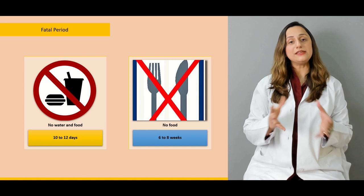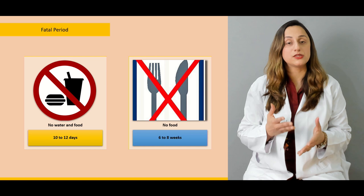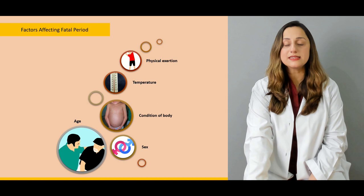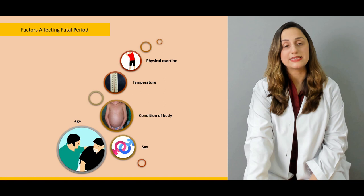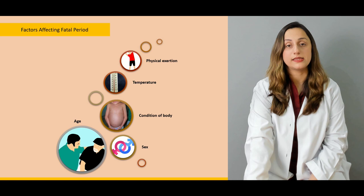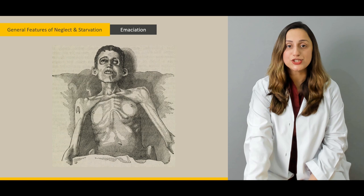We'd be dealing with the fatal periods. So knowing the fatal periods of any modes of death is quite critical and one should know what are the particular kind of fatal periods that we usually deal with in these particular kind of cases. The factors affecting the fatal periods predominantly include age, sex of the individual, the conditions of the body, the environmental conditions, particularly the temperature, as well as the physical exertion play a pivotal role in the fatality of the individual.